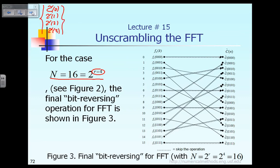This unknown vector is equal to a coefficient matrix with entries W raised to powers: W^0, W^(0×1)=0, W^(0×2)=0. Then W^(1×0)=0, W^(1×2)=2, W^(1×3)=3, W^(1×4)=4.